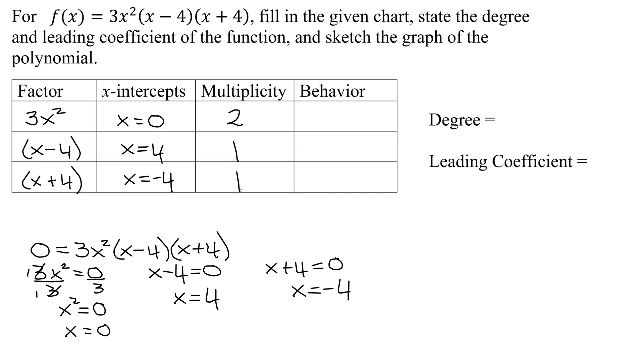So now I've found all the multiplicities. If you add up the multiplicities, that equals the degree of the polynomial. So what is our degree? 2 plus 1 plus 1 is 4. So my degree is 4.